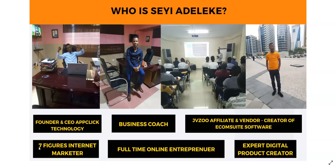I'm a seven-figures internet marketer — I do seven figures every single month and my results speak for me. I'm completely different from those online gurus that make money selling courses to you. I have my own online business, I've set up my own online system, and I make money on autopilot — so even when I'm sleeping, money still runs into my account. I'm a full-time online entrepreneur; 95% of my businesses are online-based and I've been running online business for over seven years.